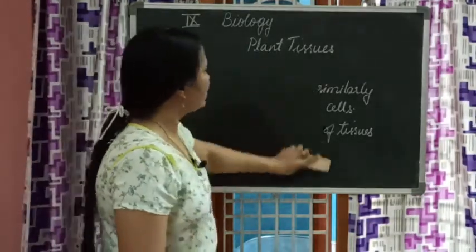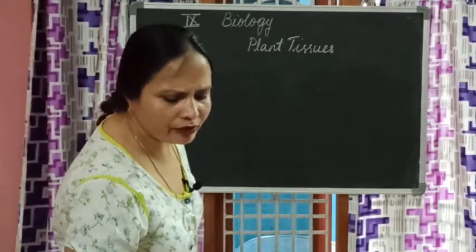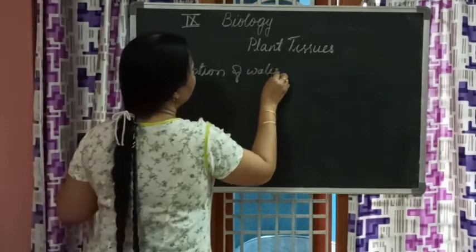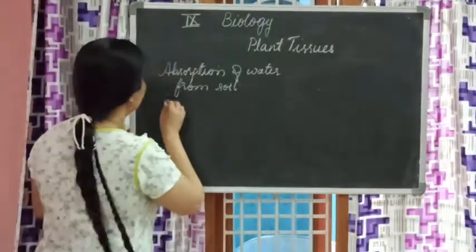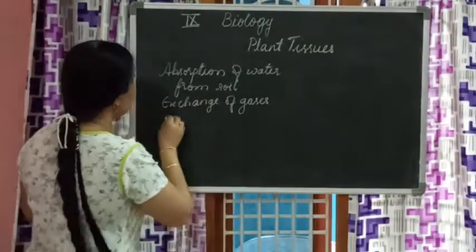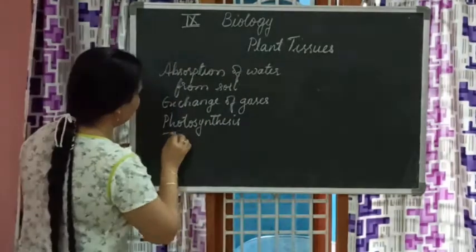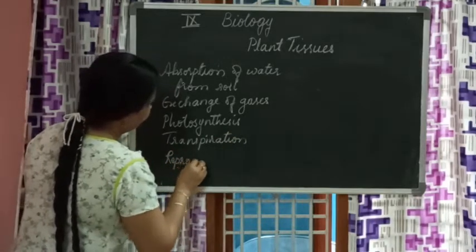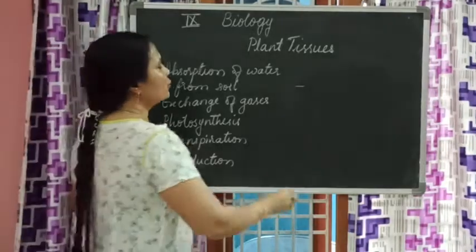Every part of the plant has a different function to perform. Activity 1 in the textbook asks you to find out which part performs which function. The functions listed are: absorption of water from soil, exchange of gases, photosynthesis, transpiration, and reproduction. I expect you to fill this activity in your textbook, children.